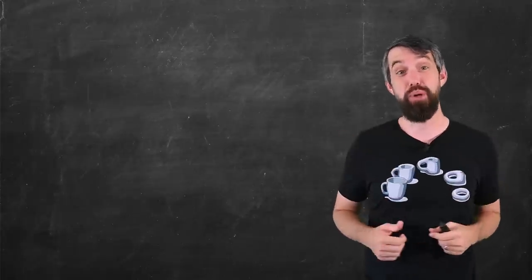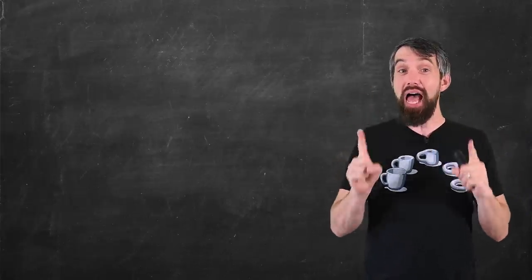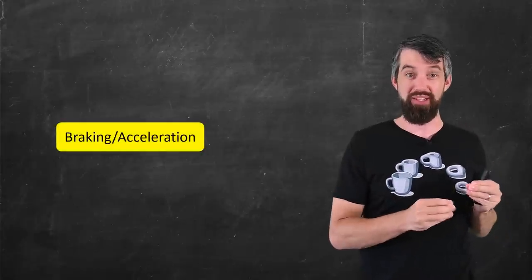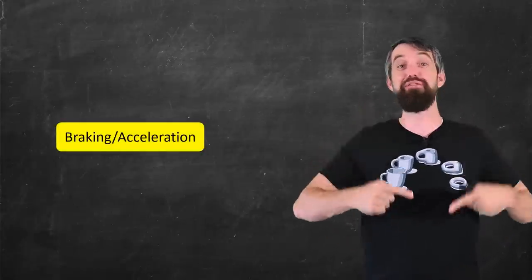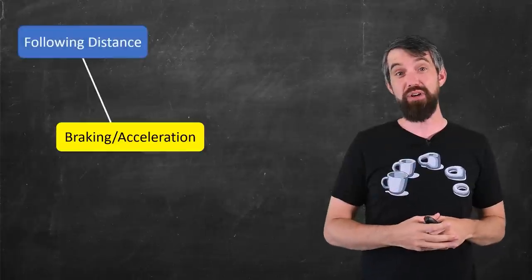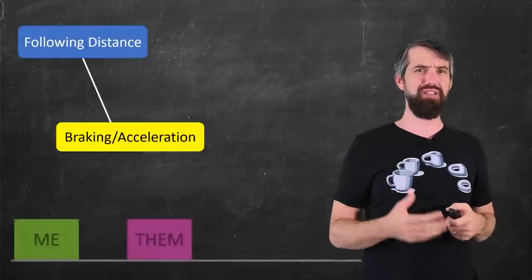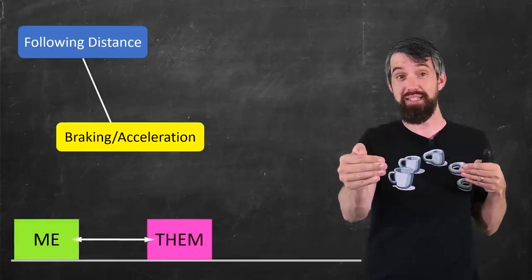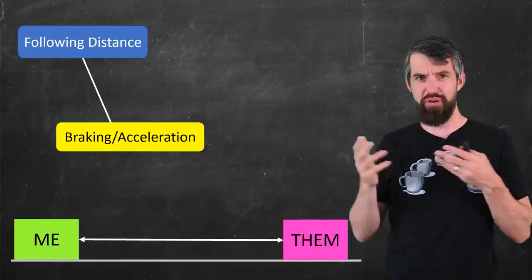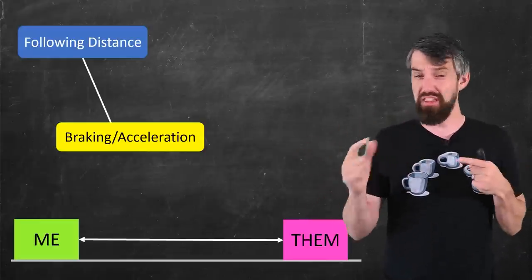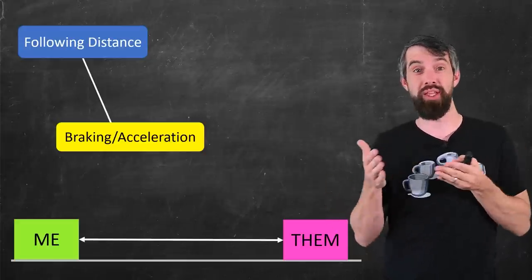Now I want to decide what should I actually put into my model. When I think about myself as a driver, the main thing that I can control when I'm on a single lane of traffic is my braking or my acceleration. So what I'm going to try to do is come up with a mind map of the different factors that might influence whether I brake or accelerate. For example, one factor might be the following distance. If you find yourself right behind somebody in front of you, you might want to brake and stretch out that distance. In contrast, if the other car is far away from you, then you could accelerate a little bit and make up that gap.